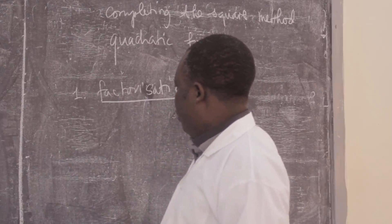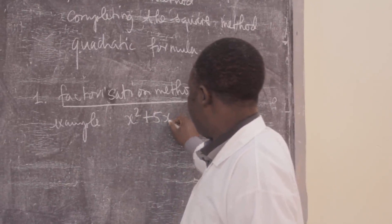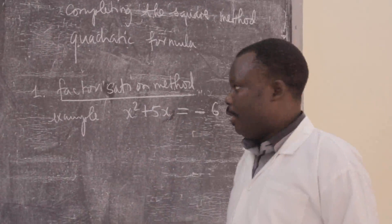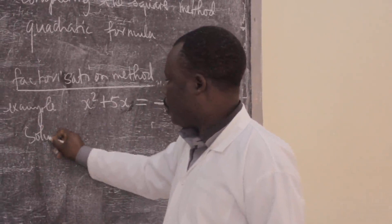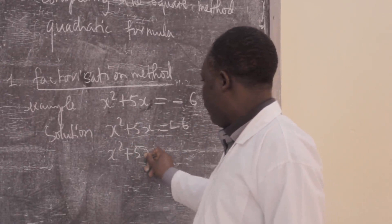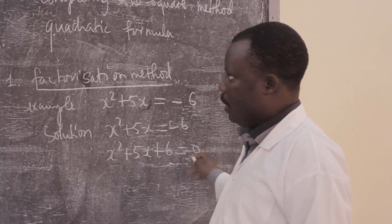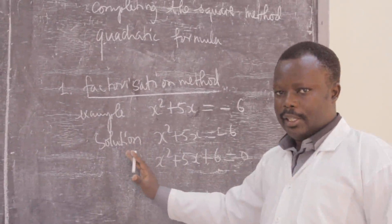For example, solve x² + 5x = -6. We rewrite this as x² + 5x + 6 = 0, then factorize the left-hand side of the equation.